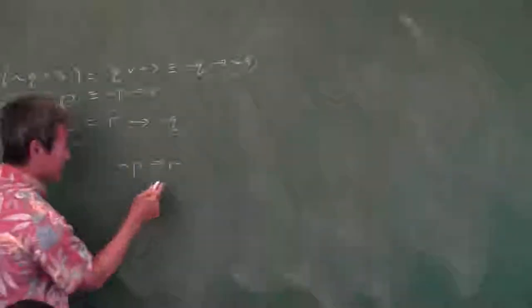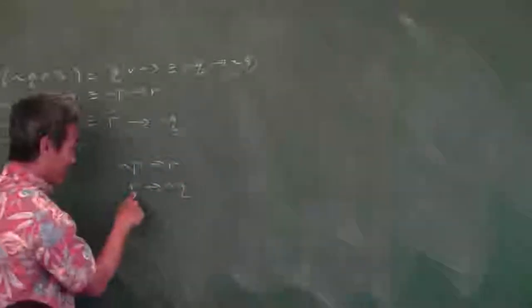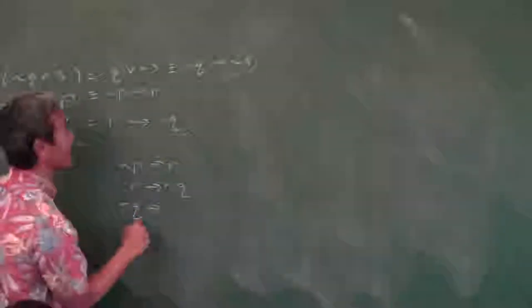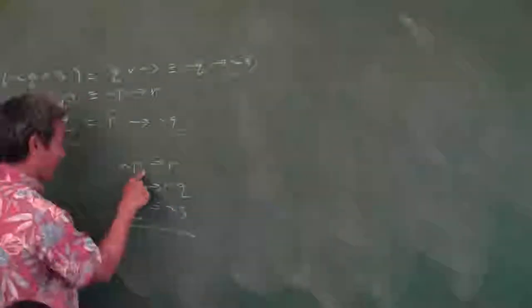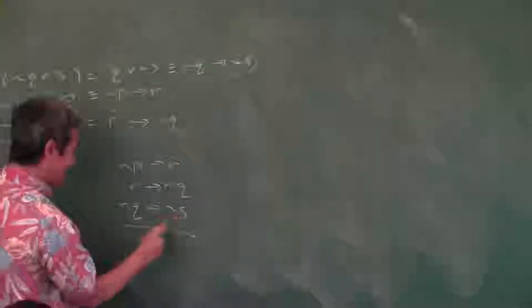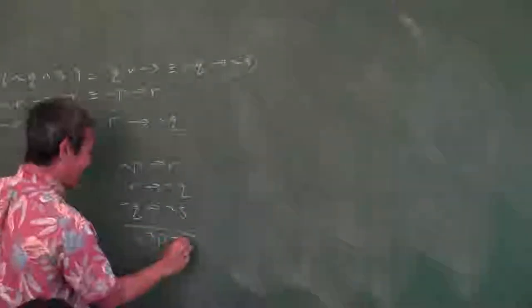Now if I'm going to use the law of syllogism, the next statement has to be R implies something. We get R implies NOT Q. Then we need NOT Q implies something — we get NOT Q implies NOT S. So: NOT P implies R, R implies NOT Q, NOT Q implies NOT S. Therefore NOT P implies NOT S.